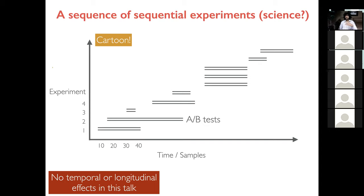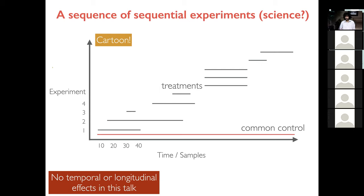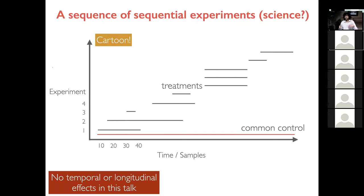An A/B test is like a two-sample test — two versions A and B, and you're trying to see which makes website visitors more likely to click on an ad. In the pharmaceutical industry, you might have a common control population — people without a disease given a placebo — and many treatment populations. Think of a disease like Crohn's where different trials go on over time. Clearly there will be some dependence between tests when there's a shared common control population.